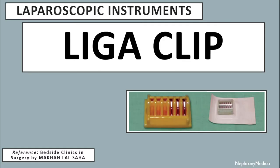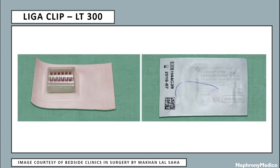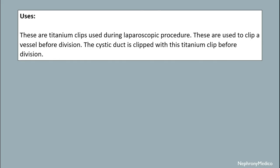Let's talk about Liga clips, which are laparoscopic instruments. This is a picture showing the Liga clip LT400, and this is a picture showing the Liga clip LT300. Uses: these are titanium clips used during laparoscopic procedures to clip a vessel before division. The cystic duct is clipped with this titanium clip before division.